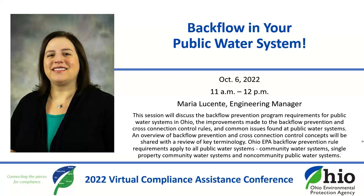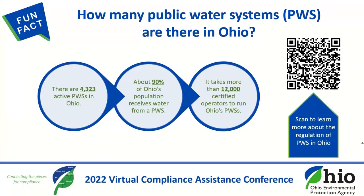Before we get started, we'd like to point your attention to one of today's environmental fun facts. Do you know how many public water systems there are in Ohio? About 90% of Ohio's population receives water from 4,323 active public water systems. It takes more than 12,000 certified operators to run these systems. You can scan the QR code on this slide to learn more about the public water systems and how they're regulated by Ohio EPA.